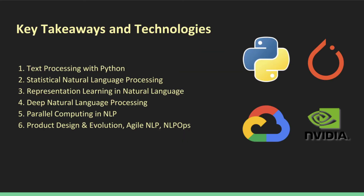In this course, you will gather experience working with technologies such as NLTK and Python, as well as the PyTorch framework, which for fast computation relies on NVIDIA's parallel computing toolkit called CUDA. You will also interact with Google Cloud Platform. More specifically, you'll learn how to process text utilizing Python, statistical natural language processing, representation learning in natural language, deep natural language processing, parallel computing in NLP, as well as product design, evolution, agile NLP, and NLP Ops.